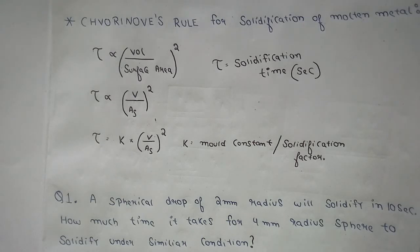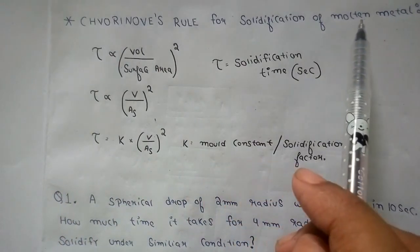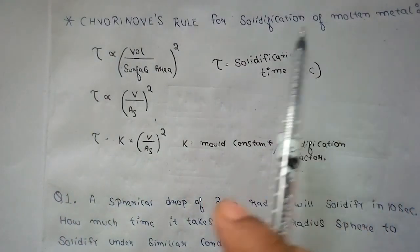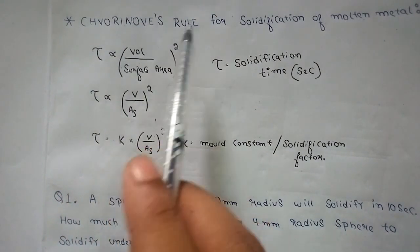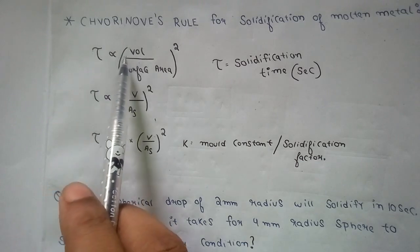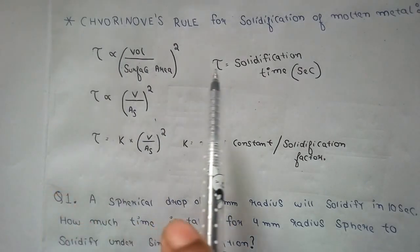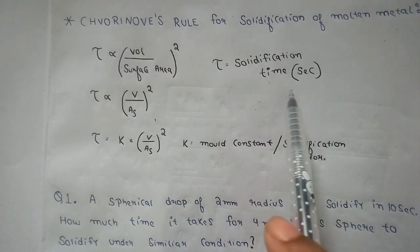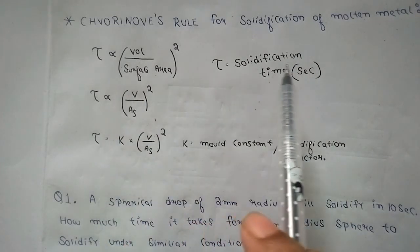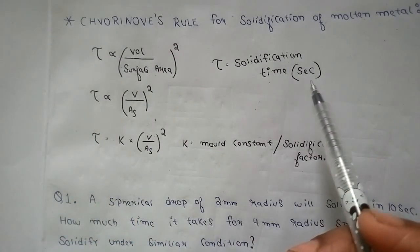As you can see here, we have written Chvorinov's rule for the solidification of molten metal. This rule says that tau is directly proportional to volume by surface area, where tau is the solidification time, generally denoted in seconds or can be converted to minutes.